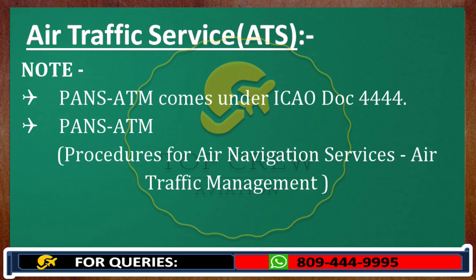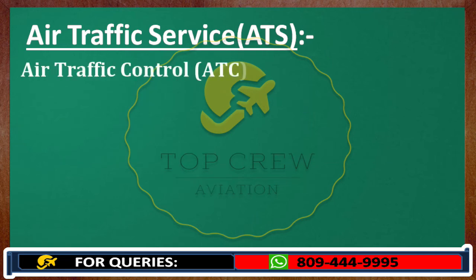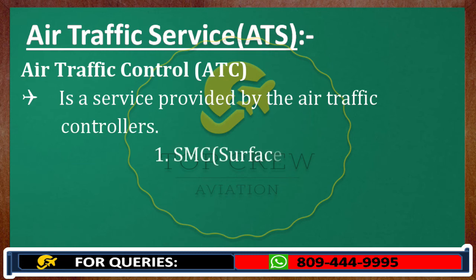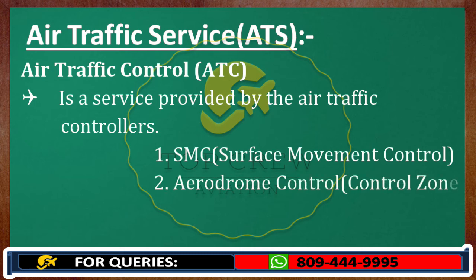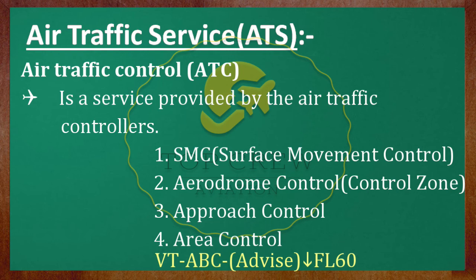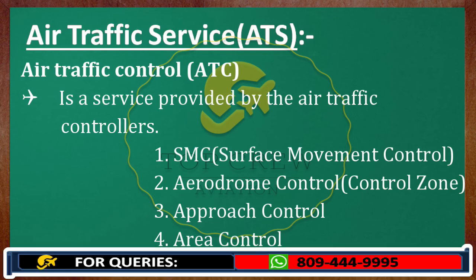The last type is ATC — air traffic control — a service provided by air traffic controllers. There are four types of air traffic controllers: number one, SMC (surface movement control); number two, aerodrome controller; number three, approach controller; number four, area control. We will cover these in an upcoming video. What's important to understand now is that when ATC provides an instruction — for example, 'Victor Tango Alpha Bravo Charlie, descend flight level 6-0' — the PIC is bound to comply.